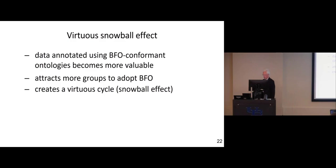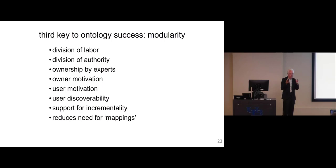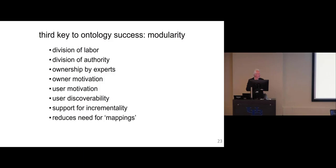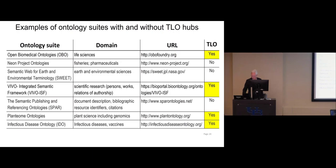Modularity gives a division of labor — cell experts work on the cell ontology, protein experts on the protein ontology — and a division of authority, so the people in charge of an ontology are the domain experts. This might seem obvious, but most ontologies built over the last 25 years were built by computer scientists who did not know what they would reasonably be expected to know about the entities they were building ontologies about.